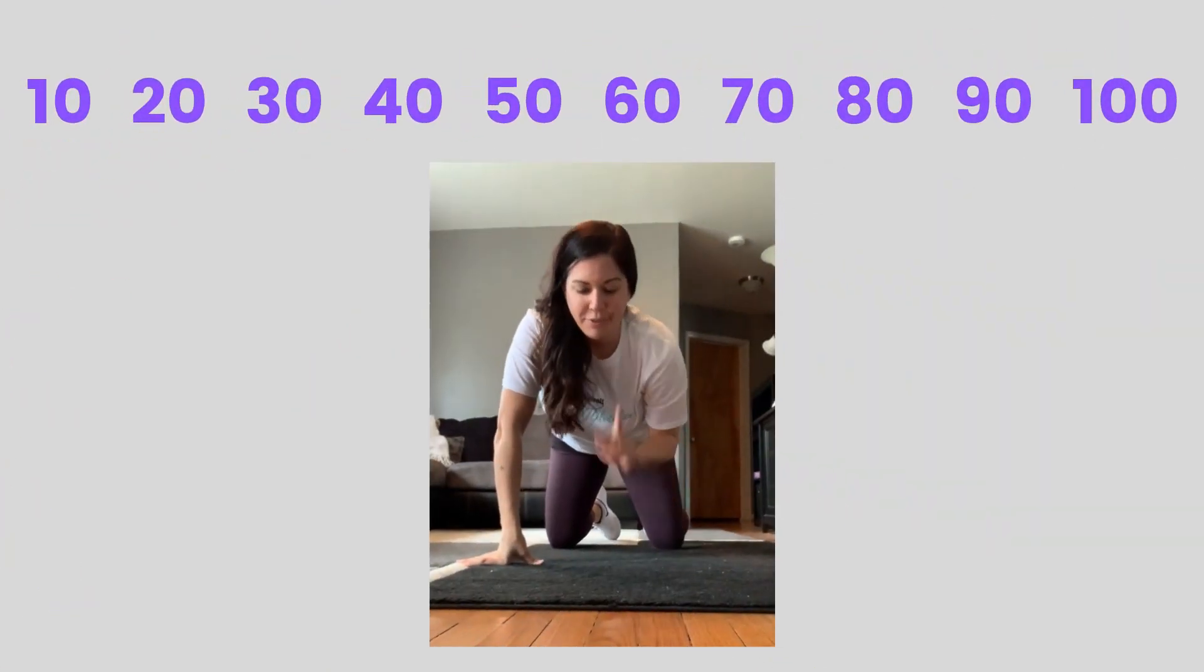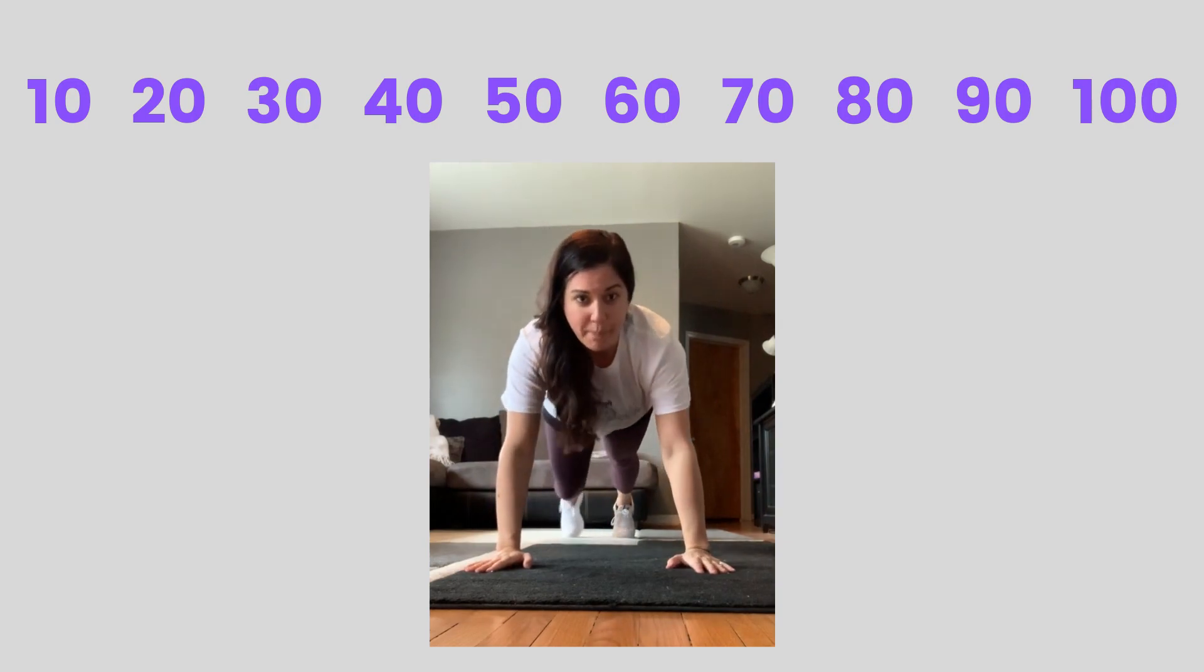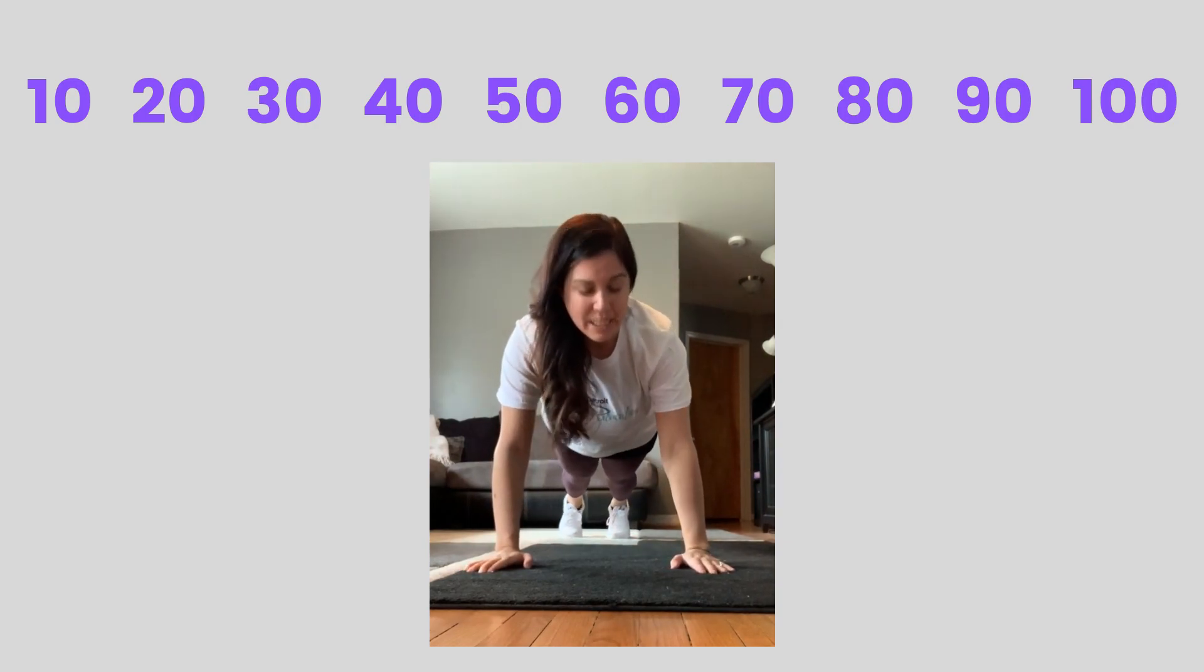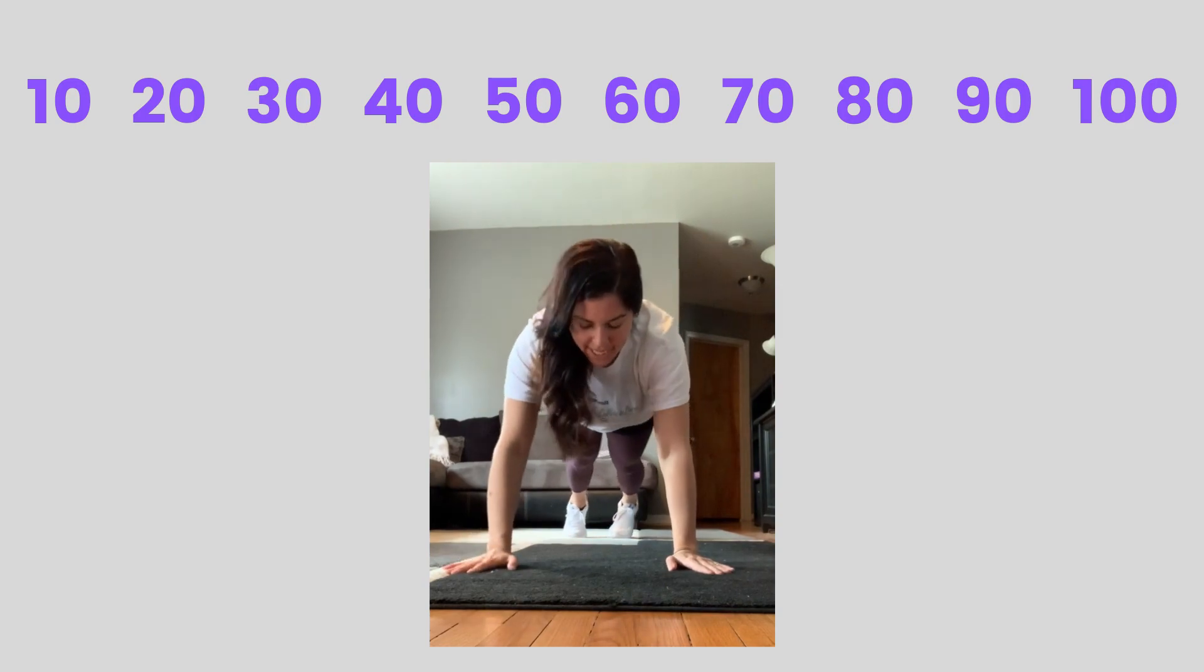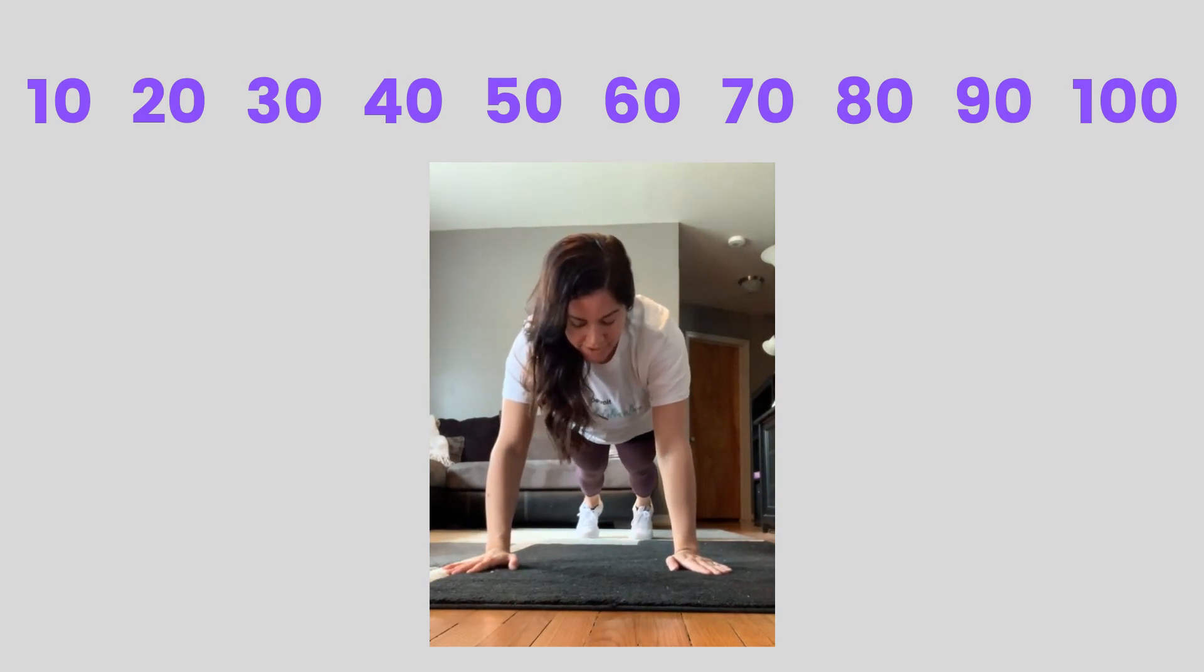All right. I had to take it down to the floor because we are doing shoulder touches. You're going to be in a push-up position, back as straight as possible, and you're just going to hit your shoulder with your opposite hand. We're counting to 100 by 10s. Ready?